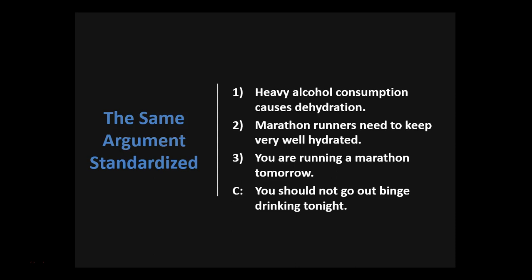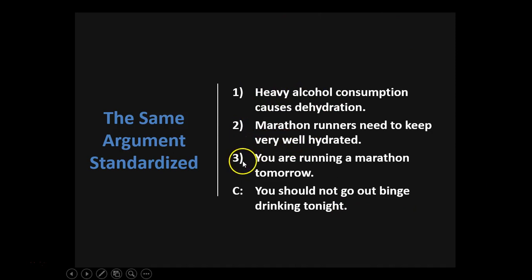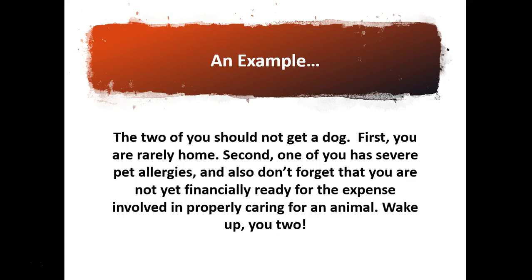That same argument about running a marathon — here's what it looks like in standardized form. You've got your conclusion at the bottom: C: you should not go out binge drinking tonight. And above it, numbered premises one, two, three. This is what a standardized argument looks like. We're going to start with some mundane examples and they'll be pretty simple, but that's how you start. Here's an example: The two of you should not get a dog. First, you're rarely home. Second, one of you has severe pet allergies. And also, don't forget that you're not yet financially ready for the expense involved in properly caring for an animal. Wake up, you two.